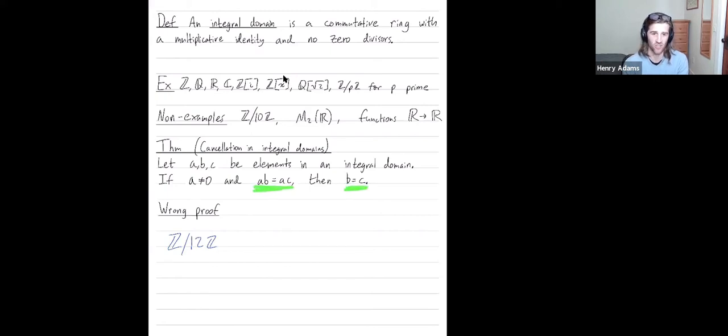That's not going to be true in Z mod 12Z. So let a be 3 and let b and c be 4 and 8. In Z mod 12Z, 3 times 4 is 12, which is 0, and 3 times 8 is 24, which is 0.